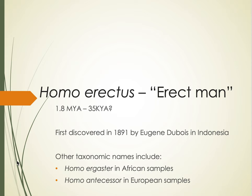Some paleoanthropologists have argued there's enough difference between samples to break them down into more species. Some believe there are three species: Homo ergaster for the African samples, Homo erectus for the Asian samples, and Homo antecessor for the European samples. Again, in your lab, you will make the decision as to whether you think there are big enough differences between the three samples provided to identify them as three separate species.